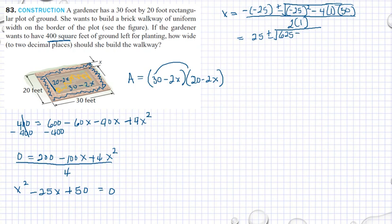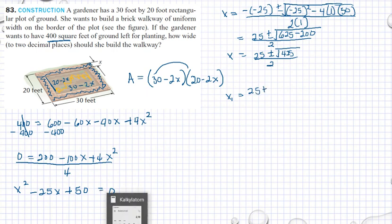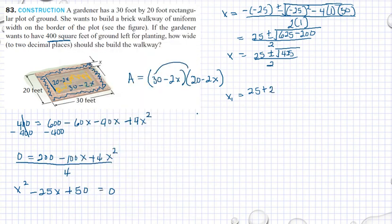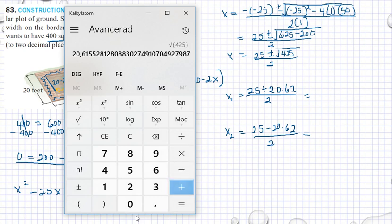Then we have 25 plus or minus the square root of 625. 25 times 25 is 625 minus 200, which gives us 25 plus or minus the square root of 425 divided by 2. That's our x.